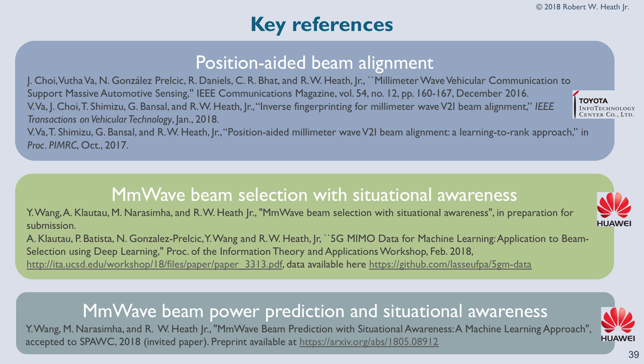These are references you can check out later. There's work on position-aided beam alignment from last year, some still in archive under submission. The work with situational awareness is newer — the main results will be presented at the SPOT conference next month. We also have work on beam power and prediction available at the ITA conference, where we've made the data set available. We're hoping to have data sets for the other papers available soon as well.